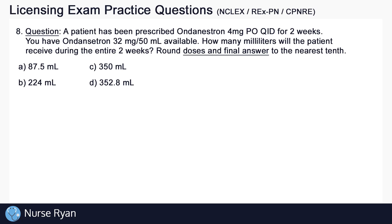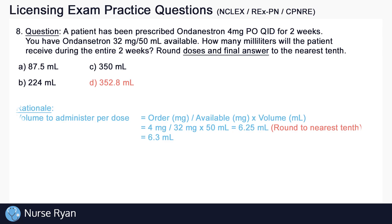Moving on to question number eight: a patient has been prescribed ondansetron 4 mg PO QID for two weeks. What you have available is ondansetron 32 mg per 50 mL. How many milliliters will the patient receive during the entire two weeks? Round doses and final answer to the nearest tenth. The answer is D — 352.8 milliliters. The formula to calculate volume per dose is: order in mg divided by available in mg, times volume in mL. That gives us 4 mg ÷ 32 mg × 50 mL = 6.25 mL, rounded to 6.3 mL.